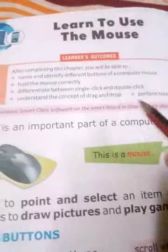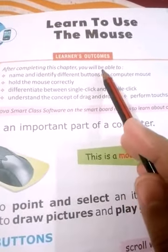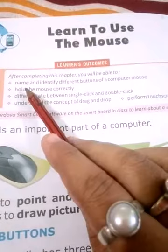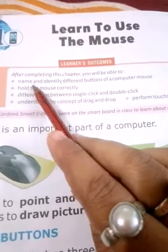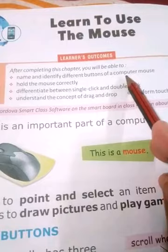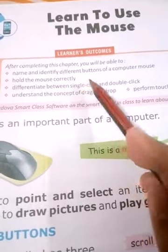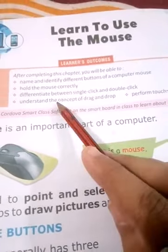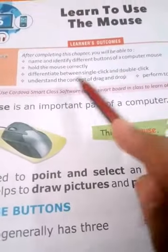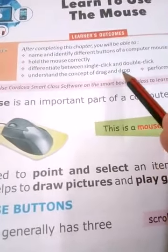First, let's look at the learner outcomes. After completing this chapter, you will be able to: name and identify the different buttons of a computer mouse, hold the mouse correctly, differentiate between single click and double click, and understand the concept of drag and drop.